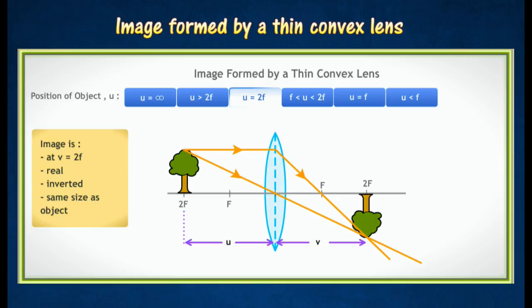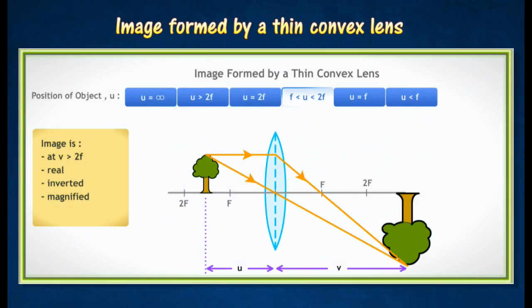It is often used as a photocopier. When the object is placed between 2F and F, the image will appear beyond 2F. The image formed is real, inverted, and magnified. This position is used as a projector and objective lens of a compound microscope.